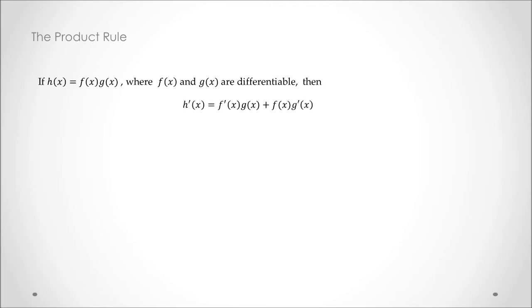So the formula goes as derivative of h of x is derivative of f of x times g of x plus f of x times derivative of g of x. Or in Leibniz notation, we're going to say d dx of f of x times g of x is going to be d dx of f of x times g of x plus f of x times d dx of g of x.